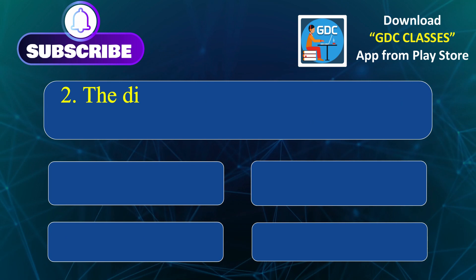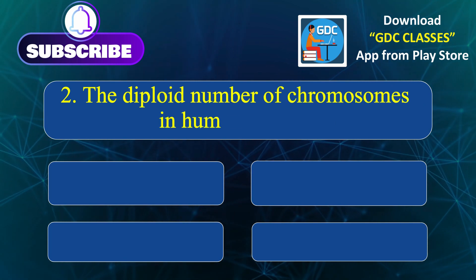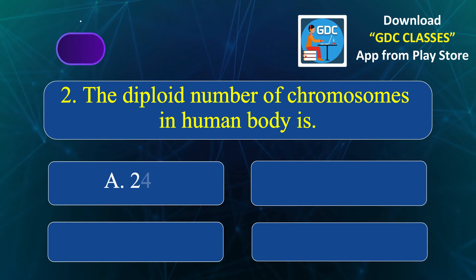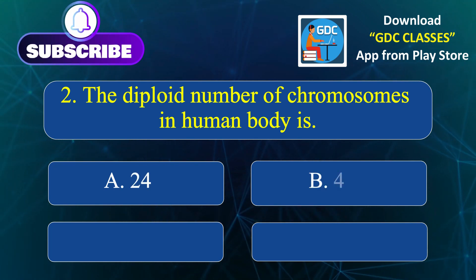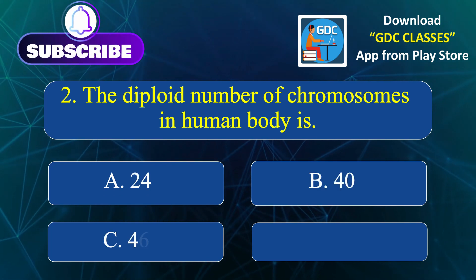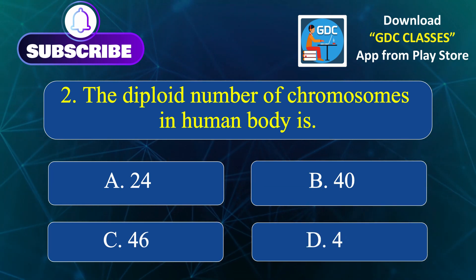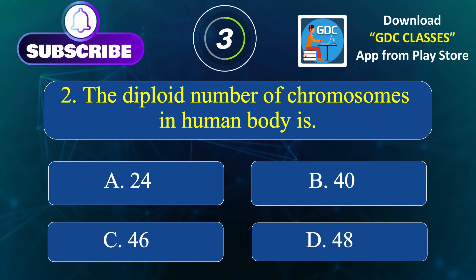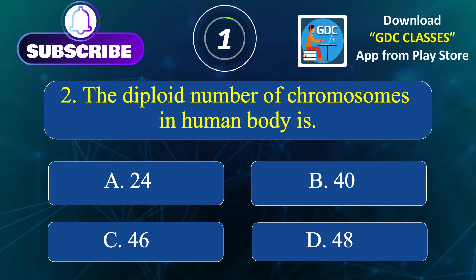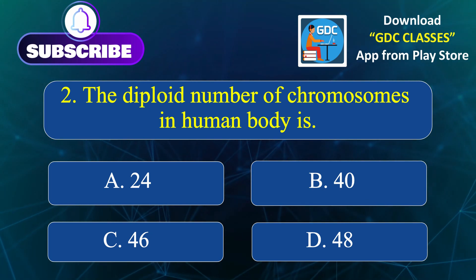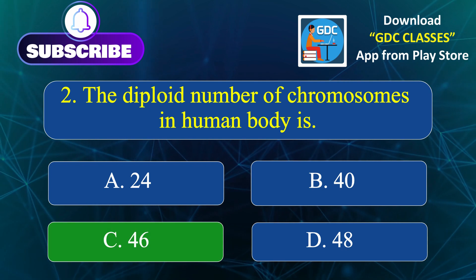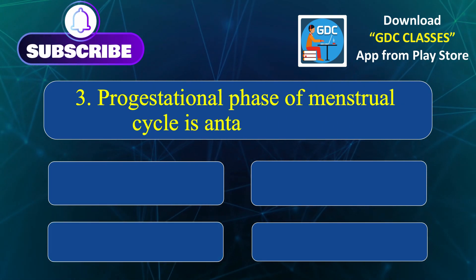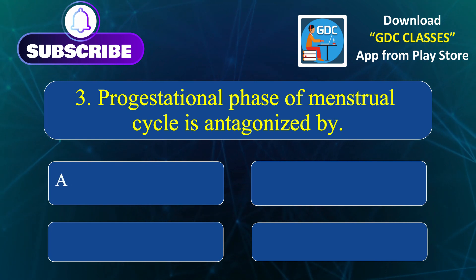The diploid number of chromosomes in the human body is: Option A. 24, Option B. 40, Option C. 46, Option D. 48. Correct answer is Option C: 46.